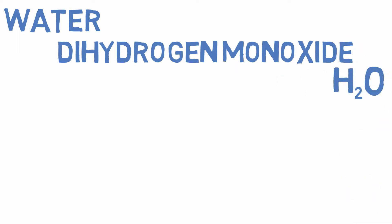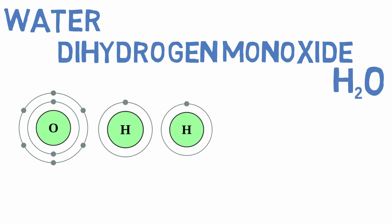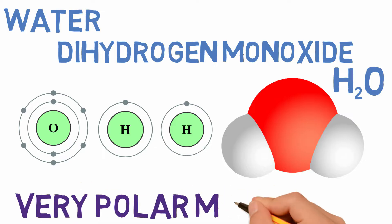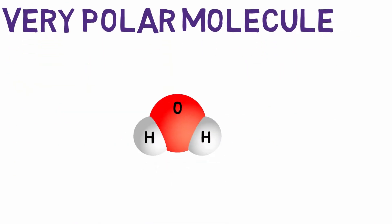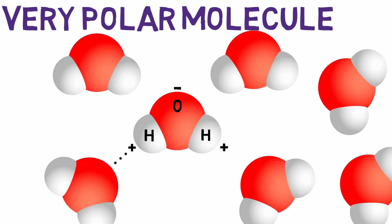Water is made up of one oxygen atom and two hydrogen atoms, and looks something like this. This structure makes water a very polar molecule. Without going into the beautiful details, oxygen has a net negative charge, while the opposite ends with the hydrogens have a net positive charge. This allows water molecules to form hydrogen bonds and gives water many of its other properties.